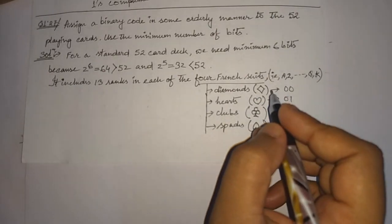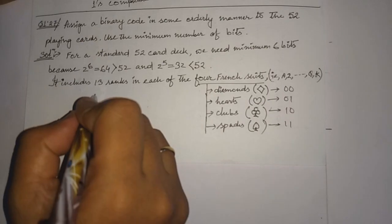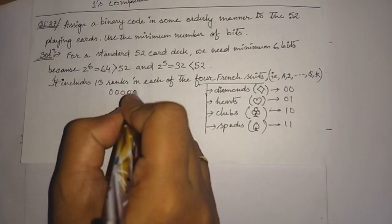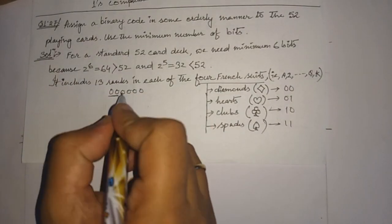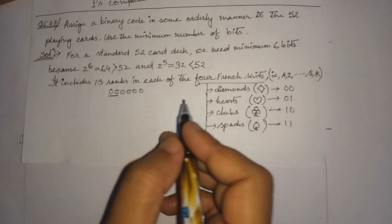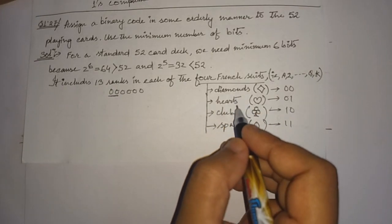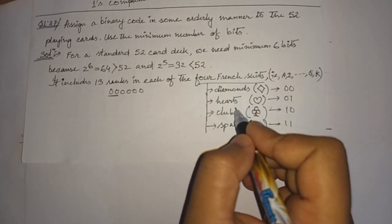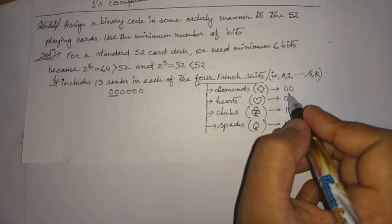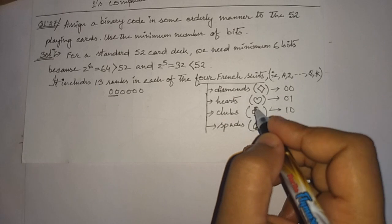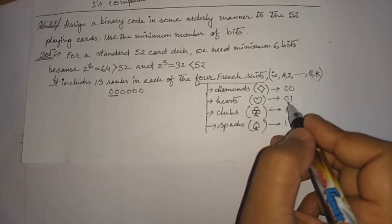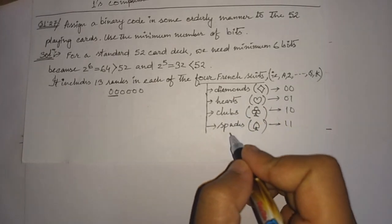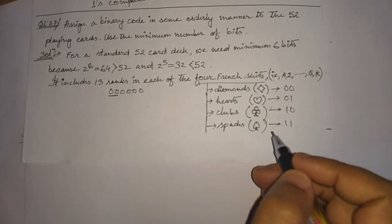Among the 6 bits, the most significant 2 bits will be used for selecting the type of suit. We assign 00 for diamonds, 01 for hearts, 10 for clubs, and 11 for spades.